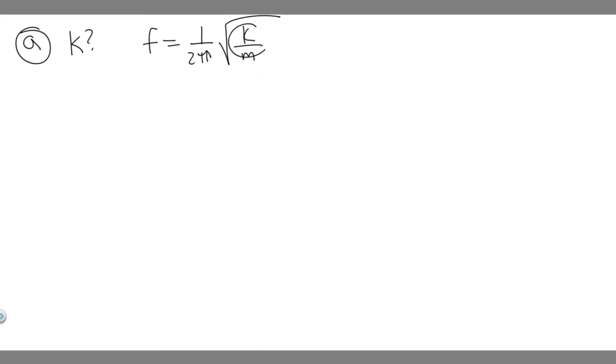Because if we have all those variables, k is by itself and we can solve. Let's write down our variables. The mass of our first block is 55 grams, and the frequency is 3 hertz.